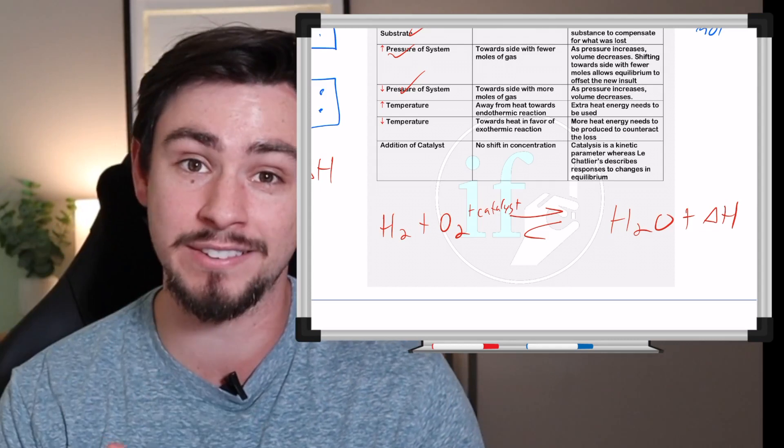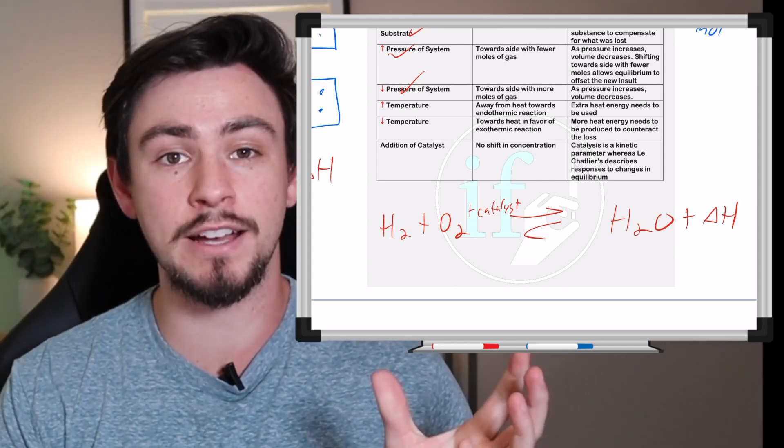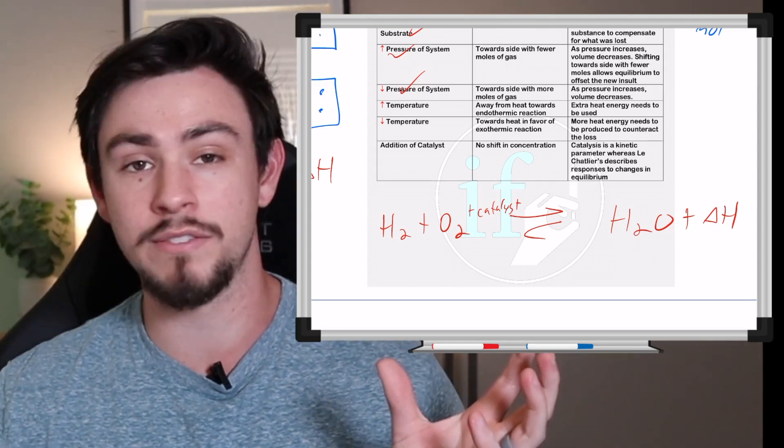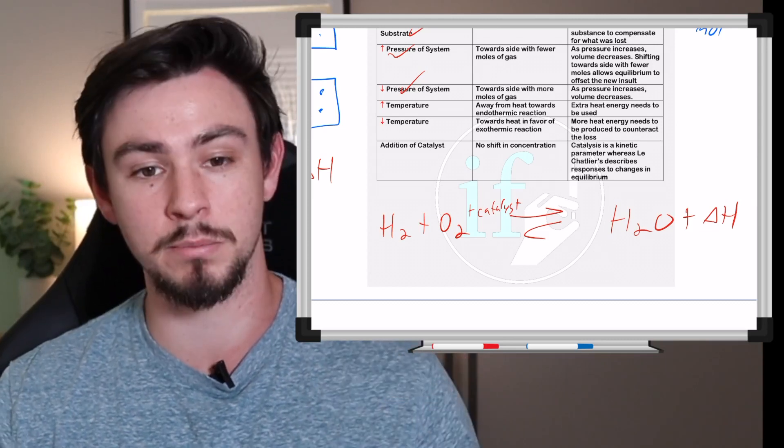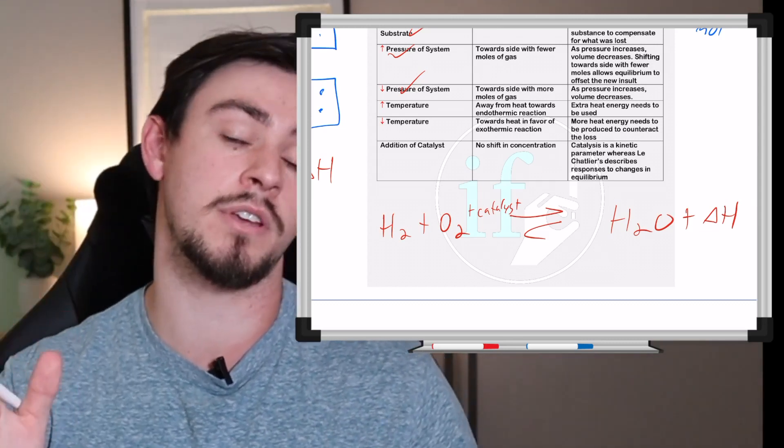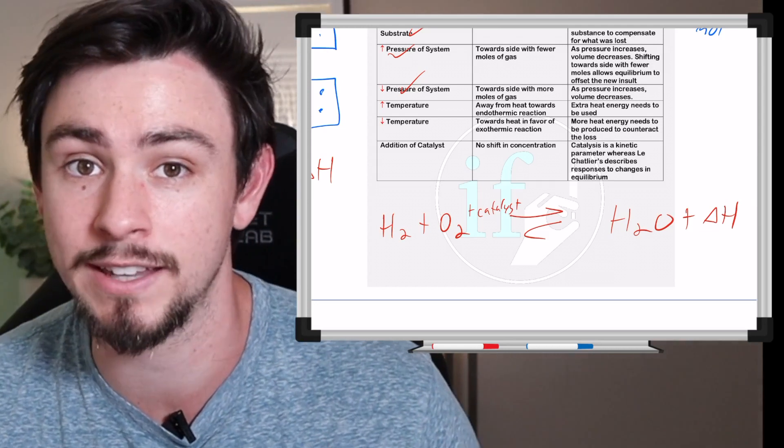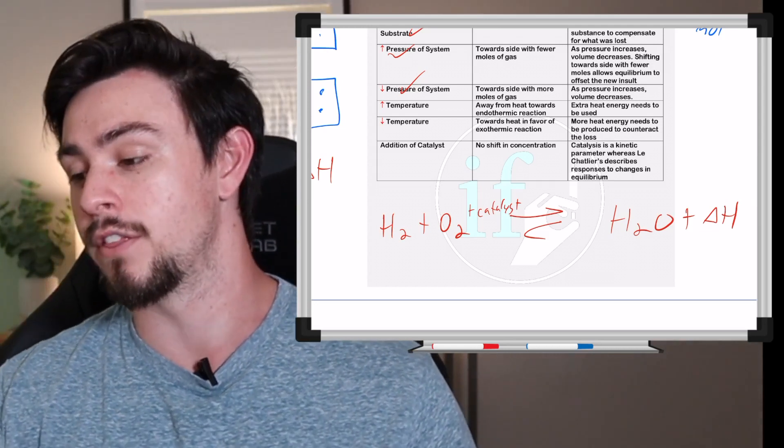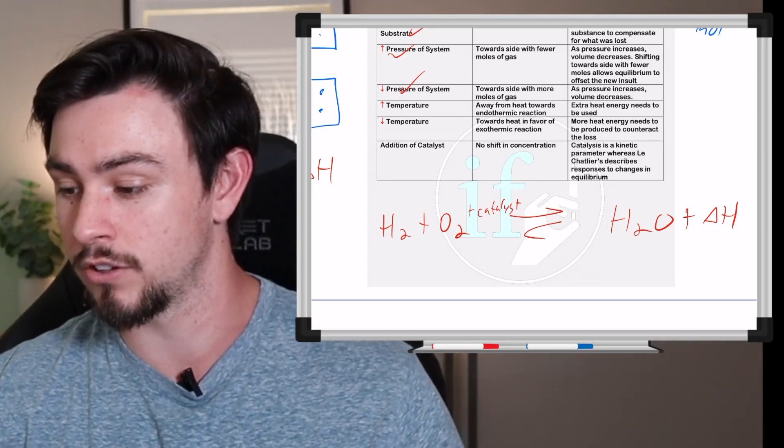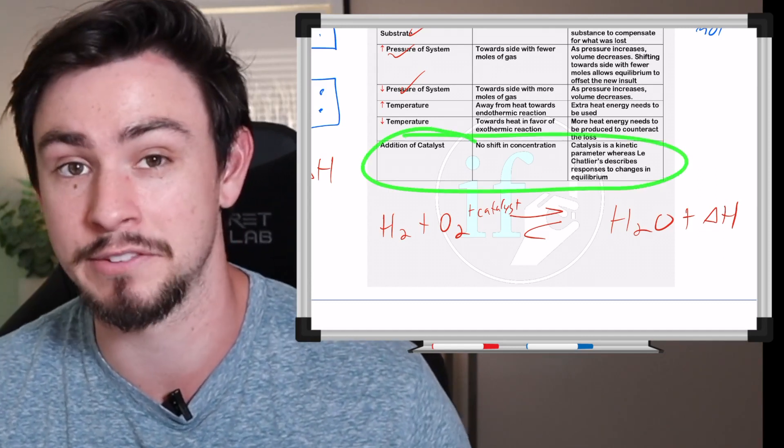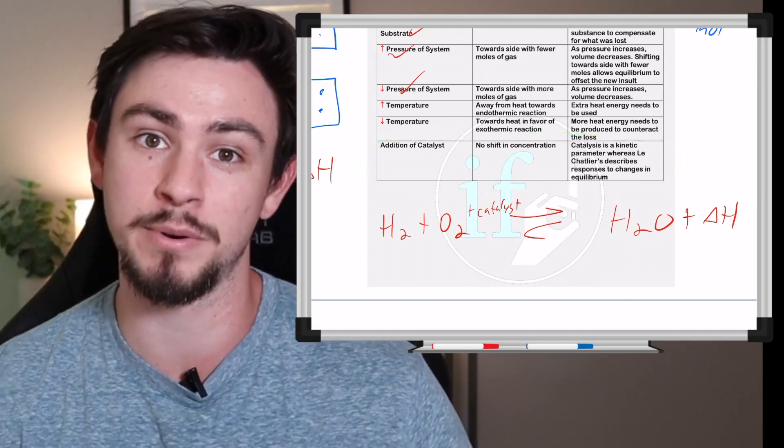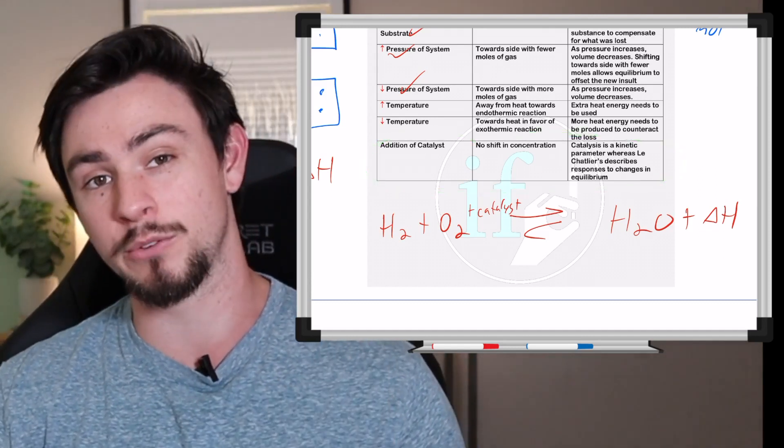And the explanation for that is because catalysis is a measurement of kinetics or how fast something occurs—speed of reaction—and equilibrium don't have anything to do with each other. They're completely separate. If you need a more in-depth explanation on how they're separate and how they change, make sure to check out that enzyme kinetics video, but this is a trick question that gets asked on the MCAT a lot. It's something that I've missed a couple of times on practice exams, so make sure that you don't miss that as well.